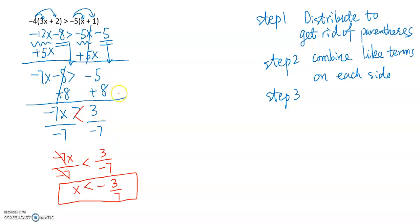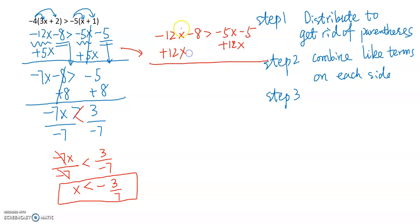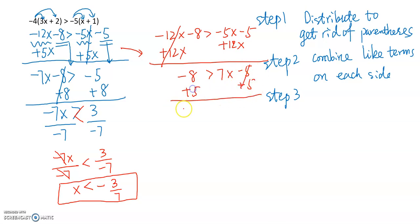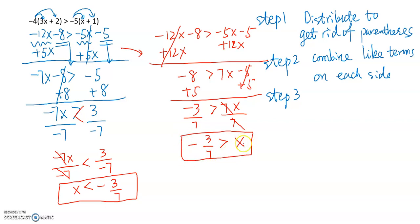There is also an alternative approach: instead of moving negative 5x to the left, we could add 12x to the right-hand side so the variable term ends up on the right. Then move the constant to the left, giving us negative 3 greater than 7x. Dividing both sides by positive 7 gives negative 3/7 greater than x. The answer looks different but is actually equivalent.